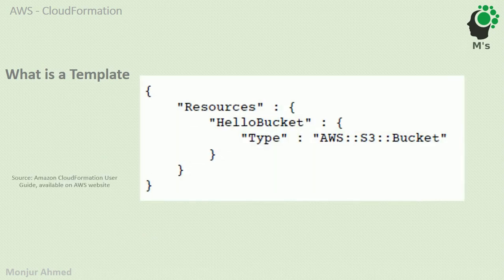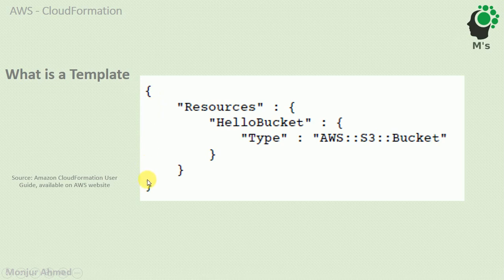Let's look at how a template looks. It's very easy to understand, and even if you don't know JSON it should not be a big deal. This is the standard template structure you need to follow. If you have a programming background, you'll recognize that this is one block, and within this block we have sub-blocks — each block starts and ends at defined points.